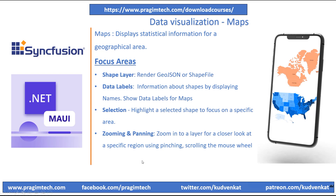Zooming and panning is another feature that allows users to zoom in on any layer for a closer look at a specific region by pinching, scrolling the mouse wheel, or using a trackpad. Pan the map to navigate across regions. Zooming and panning can be enabled for both the shape layer and the tile layer. Other advanced features of maps include tile layer, interactive map, legends, and routes.